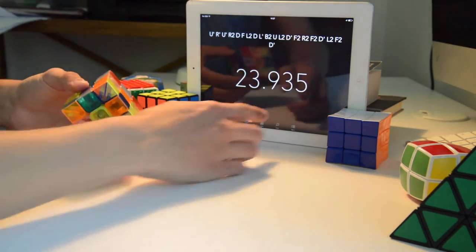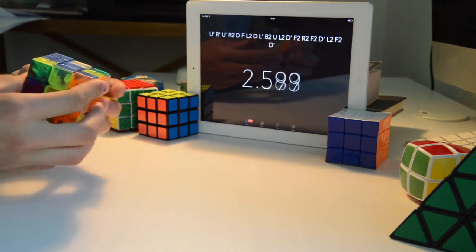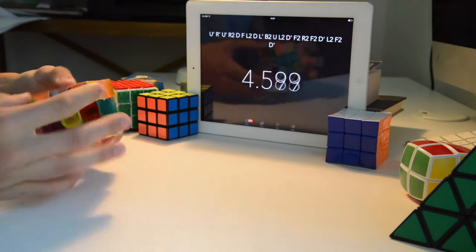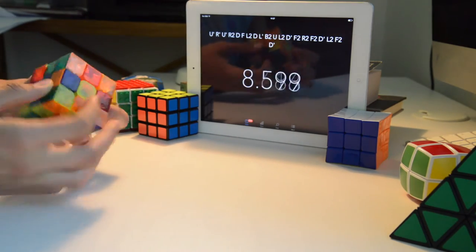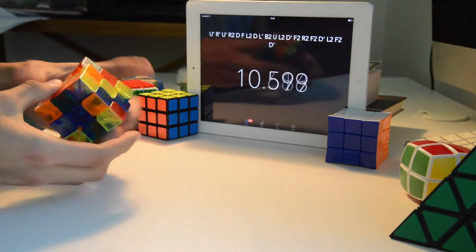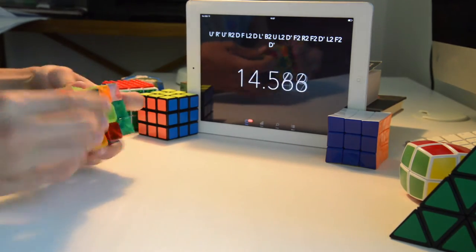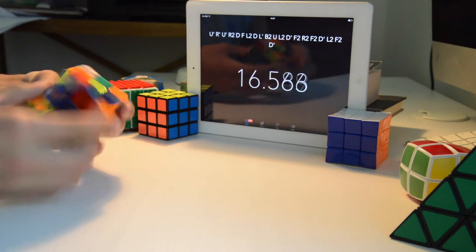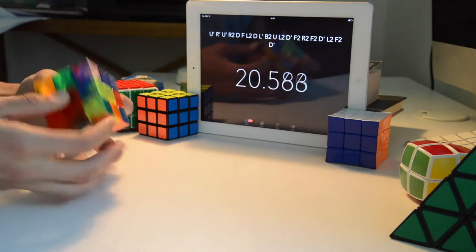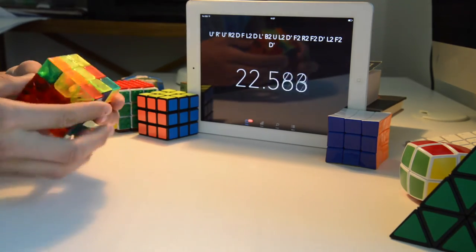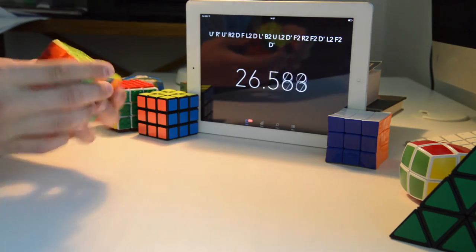One little spoiler - I ordered from cubicle.us, $100 worth of Rubik's cubes and other things like lubes and stickers. It's gonna be a pretty intense unboxing after like a week or so and I'm really excited and looking forward for that.